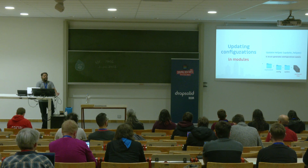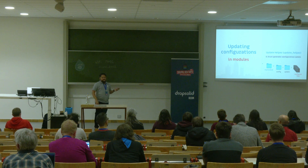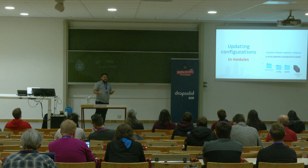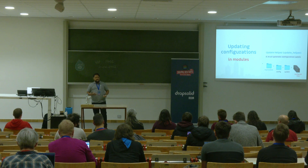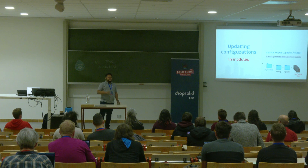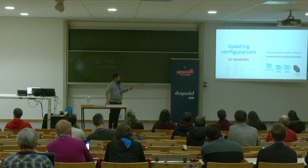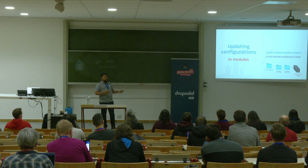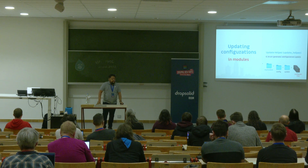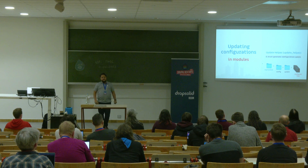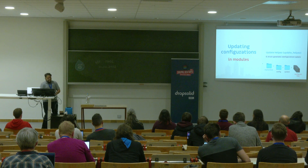I've been talking about installing configurations, but these only affect the site when you install the module. So how do we update a site with new configurations? If we want to update the same configuration installed by a module, we use the Update Helper module. It provides a way to create updates directly in your module. We can export new configurations using a Drush command, and it creates a YAML file inside the module's update directory along with an update hook. The command takes two arguments: which module to create updates for, and the update hook number.